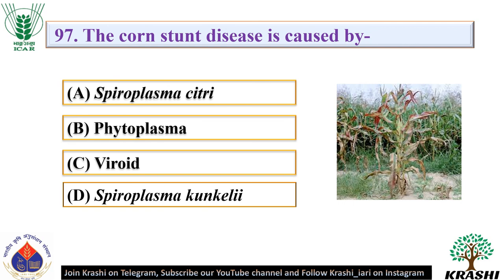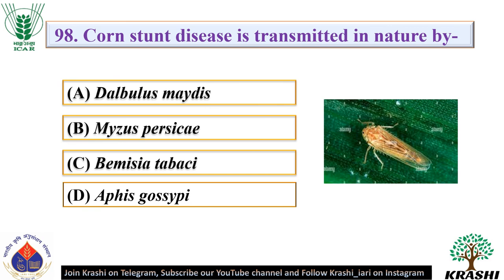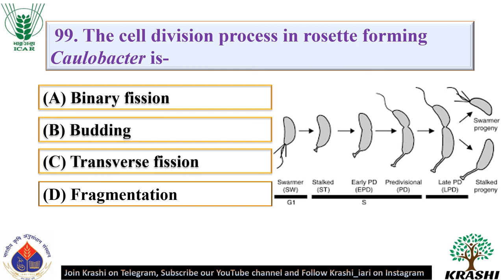Question number 97: The corn stunt disease is caused by — it is caused by Spiroplasma kunkelii. Question number 98: Corn stunt disease is transmitted in nature by option A — Dalbulus maidis, which is the maize leaf hopper. Question number 99: The cell division process in rosette forming Caulobacter is. The correct answer is option C — transverse fission. This division results in one replicative stalked cell and one non-replicative swarmer cell.